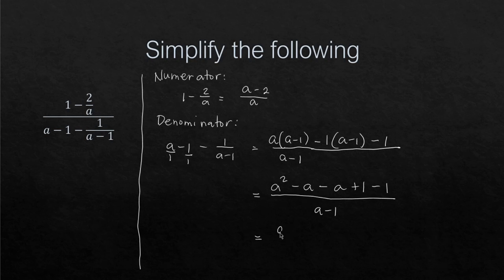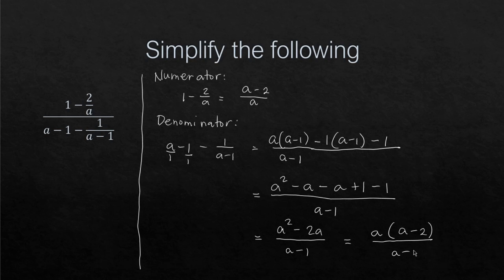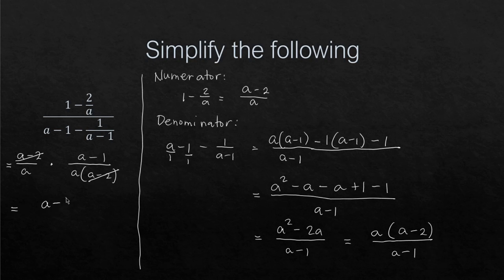Simplifying further, the numerator of the denominator is a² - 2a over (a-1). We factor out a from the top: a(a - 2) over (a-1). Now writing the full division: (a-2)/a divided by a(a-2)/(a-1). We can cancel (a-2), and the result is (a-1) over a. That is our final answer for this example.